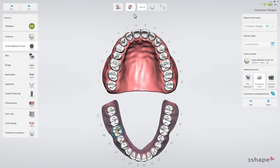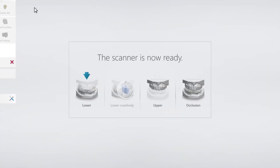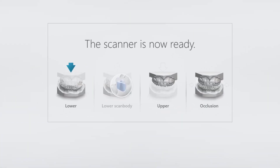Now proceed to the Scan page. If you selected Emergence Scan, you'll now have to perform four scans: lower arch, lower arch scan body, the upper arch, and finally the occlusion.